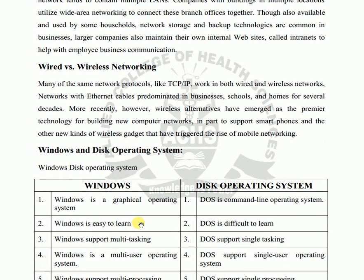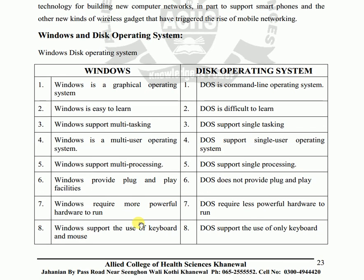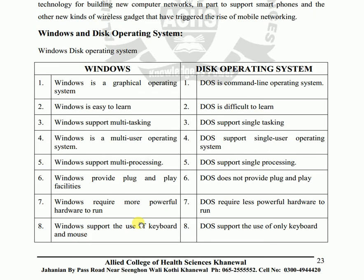Next we will learn about Windows and Disk Operating Systems (DOS). A graphical operating system like Windows establishes a connection between the user and the computer through a visual interface, while DOS was used through text-based commands.